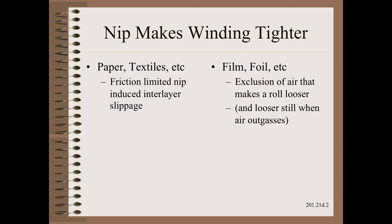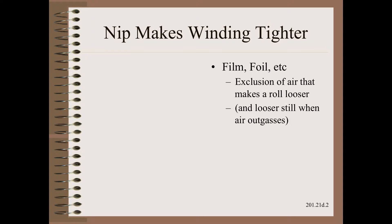As we learned in the winding mechanics section of Web 101, a nip would make a wound roll tighter than it otherwise would have been. However, the mechanism for tightening depends on what type of material is being wound. Rough materials such as paper and textiles tend to get tighter due to nip-induced inner layer slippage. This is not what we consider here.